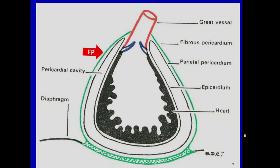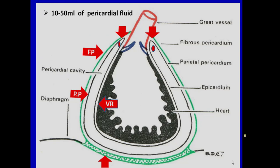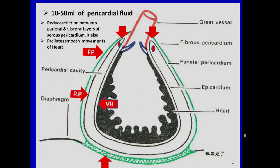Let us go to this slide to understand the anatomy of the pericardium. The pericardium consists of two layers. The outer layer is the fibrous pericardium, demarcated by a greenish outline. Fibrous pericardium inferiorly mixes with the central tendon of the diaphragm and superiorly with the adventitia of the great vessels. The parietal layer of the serous pericardium lines the fibrous pericardium, and the visceral layer lines the heart. The two layers are continuous with each other around the roots of great vessels, enclosing the pericardial cavity, which contains 10 to 50 ml of pericardial fluid.